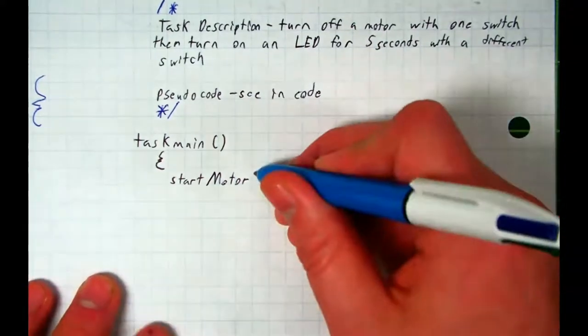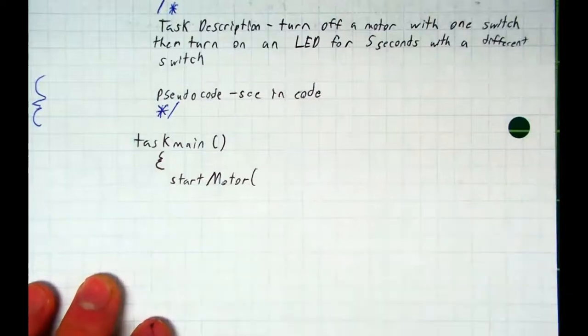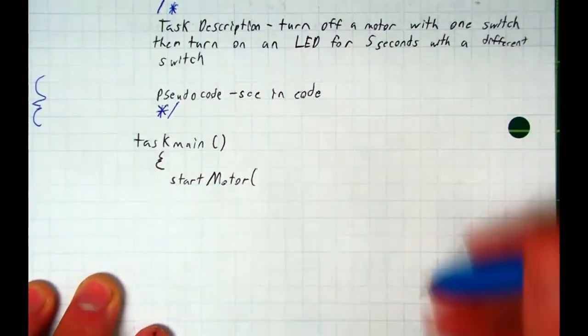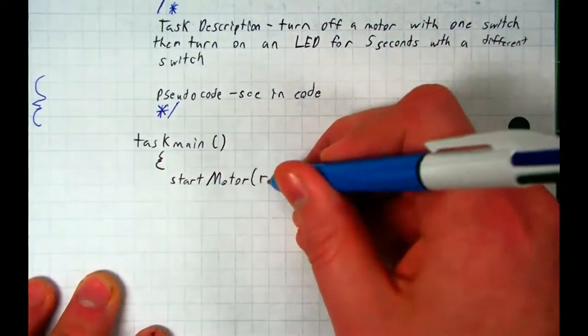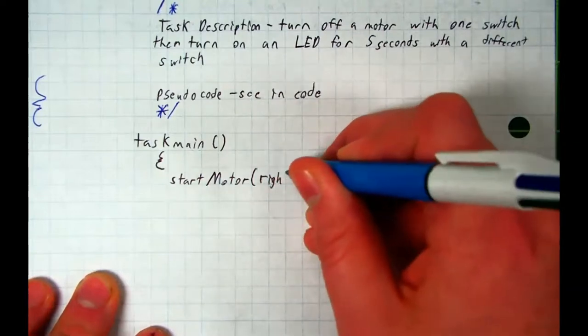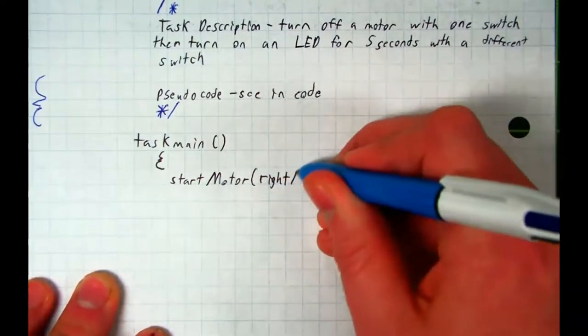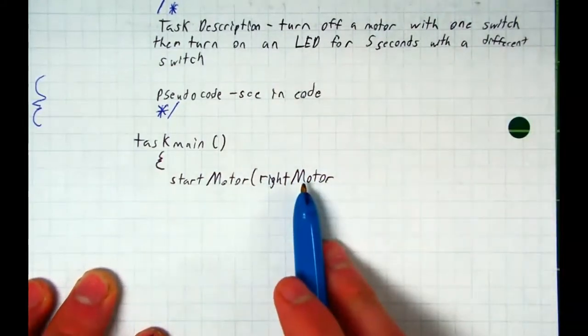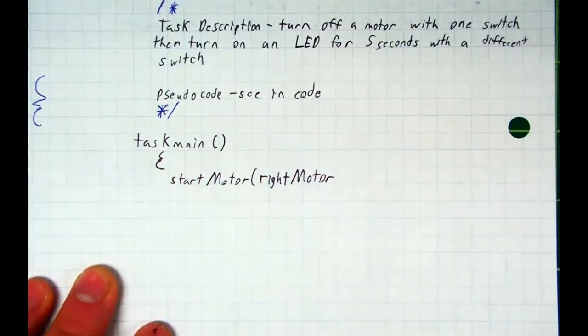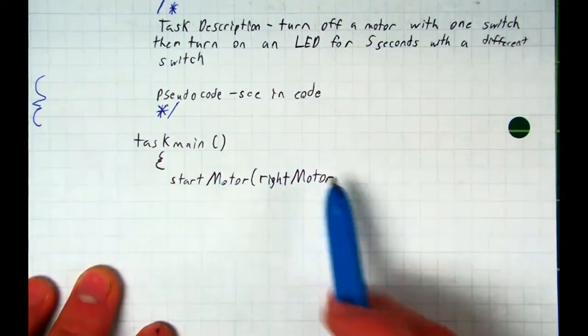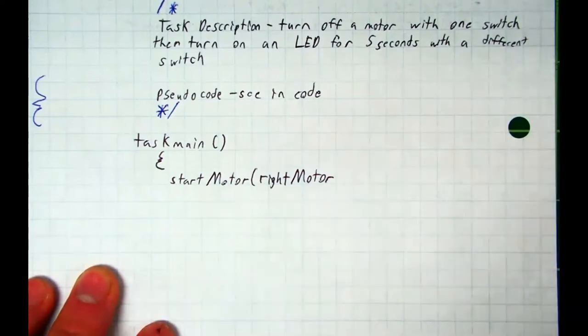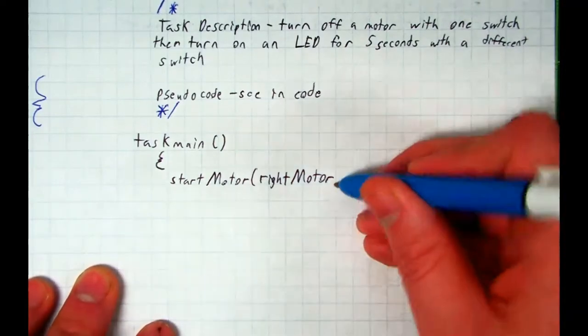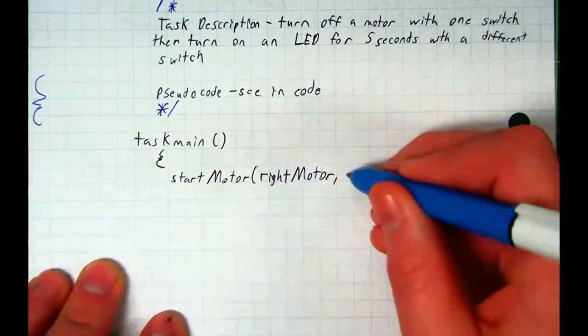So startMotor, we have to clarify what motor we want to start. I'm going to open a parentheses, again no space. Let's go ahead and do the right motor—lowercase r, right, second word capital M, motor. And we have to tell our computer, we're going to tell the robot what speed we want the motor to go. So what was the range of values your motor could go? Negative 127 to 0, 0 to 127. I'm going to tell it to go half speed, so that would be comma 63.